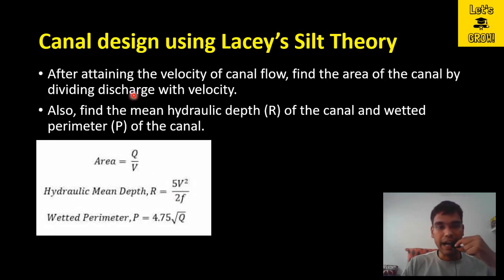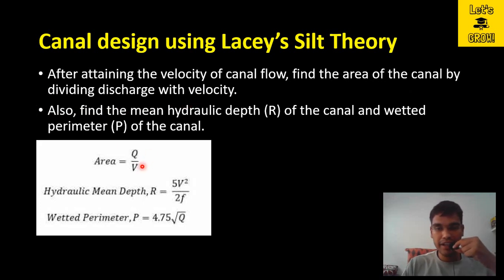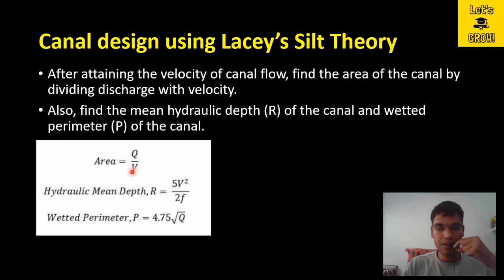After obtaining the velocity of canal flow, find the cross-sectional area of the canal by dividing discharge by velocity. This uses the continuity equation Q = A × V. Since discharge Q is known and velocity V has been calculated, we can now determine the area A = Q / V.